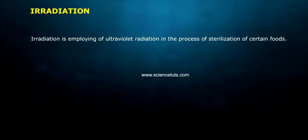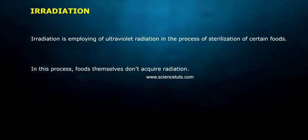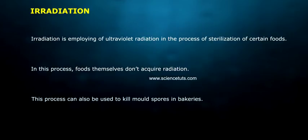Irradiation is the employing of ultraviolet radiation in the process of sterilization of certain foods. In this process, foods themselves don't acquire radiation. This process can also be used to kill mold spores in bakeries.